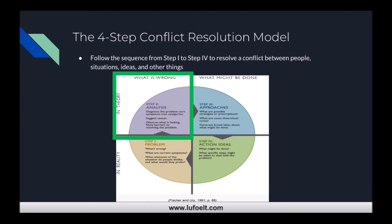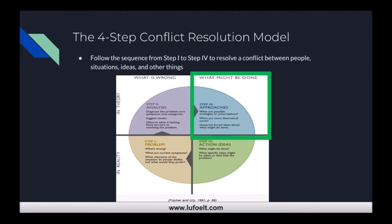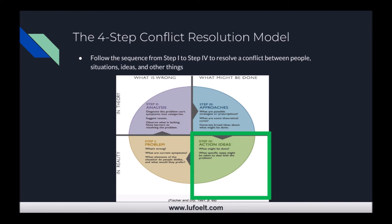Once everyone agrees on step one, move to step two: analysis. Diagnose the problem, sort symptoms into categories, suggest causes, observe what is lacking, and note barriers to resolving the problem. Step three looks at possible approaches — brainstorm strategies, theoretical cures, and broad ideas for solving the problem. Once everyone agrees, step four is action: decide which specific steps to take to deal with the problem in reality.